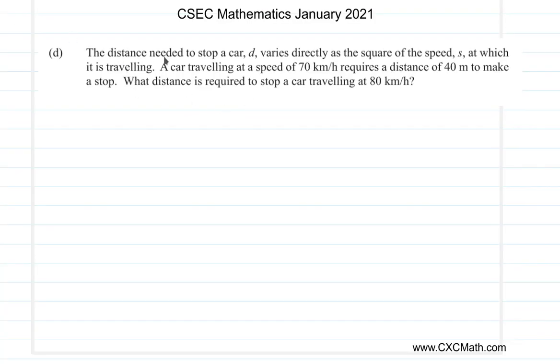So let's look at it. The distance needed to stop a car, D, that's the distance D, varies directly as the square of the speed S, the square of the speed S, at which it is traveling.